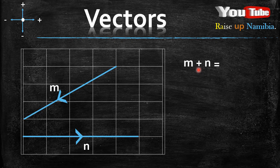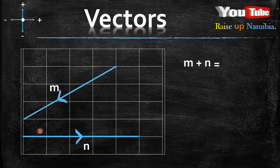How can you do that? Since you are given M plus N, you go to vector N. Since you are given the vectors on the diagram, go to vector N on the diagram. And then you join that vector — vector N's tail to vector M's head.